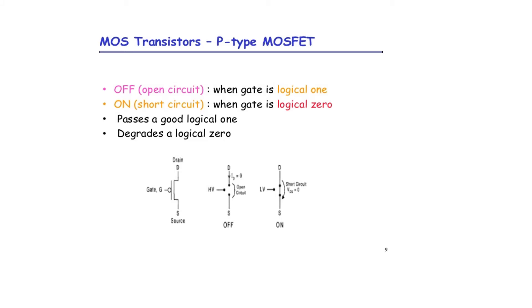For PMOS, we have a bubble in the gate symbol, and it acts like an inverter. If we give one as the input to the gate, it will produce zero as the output — just like a NOT gate. If the input is zero, the output is one and the switch turns on. If we give one as the input, it produces zero as the output and acts as an open switch.